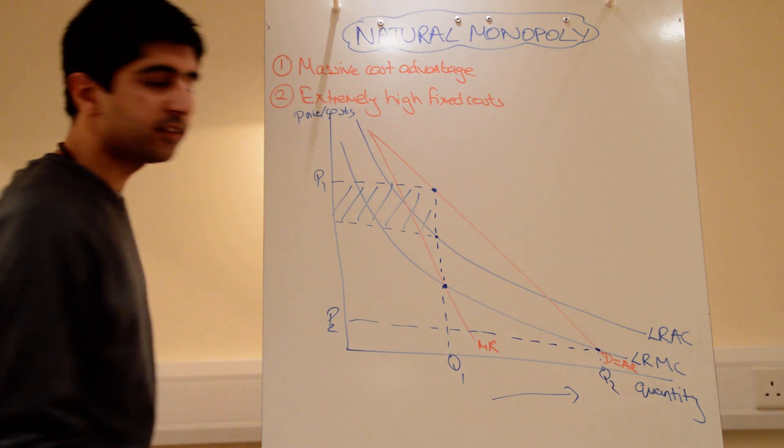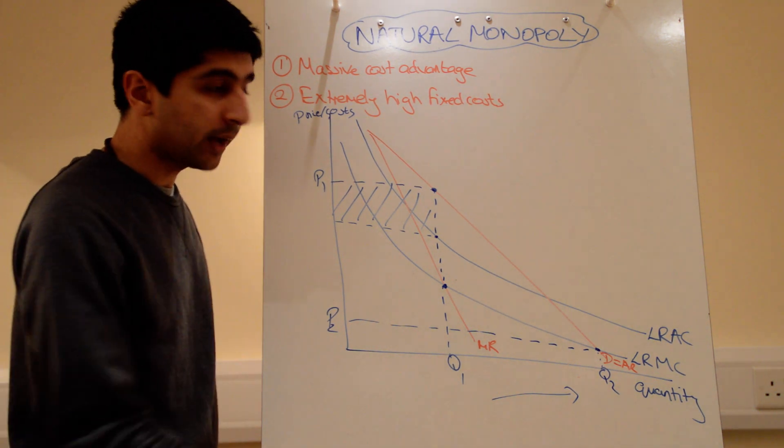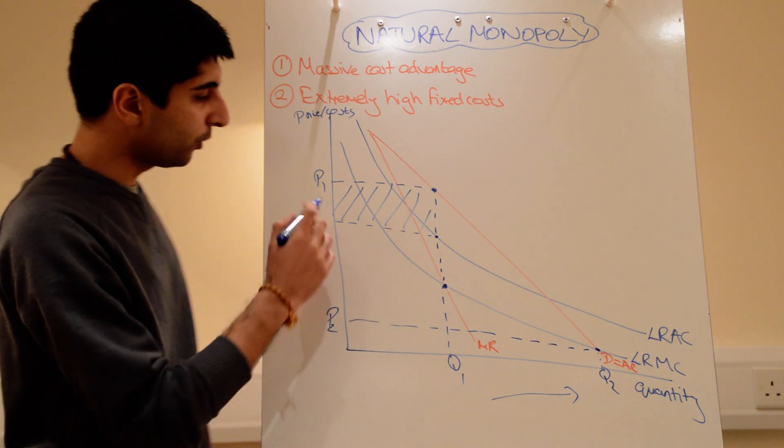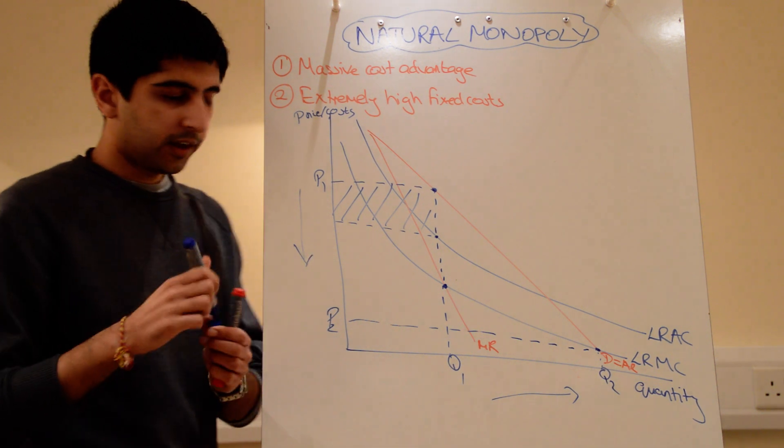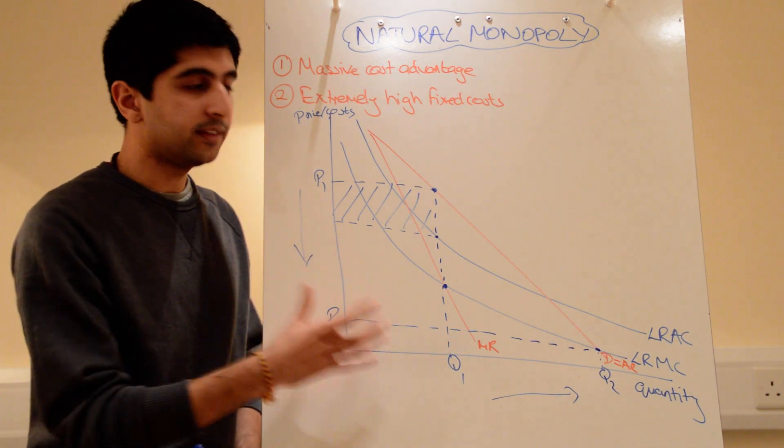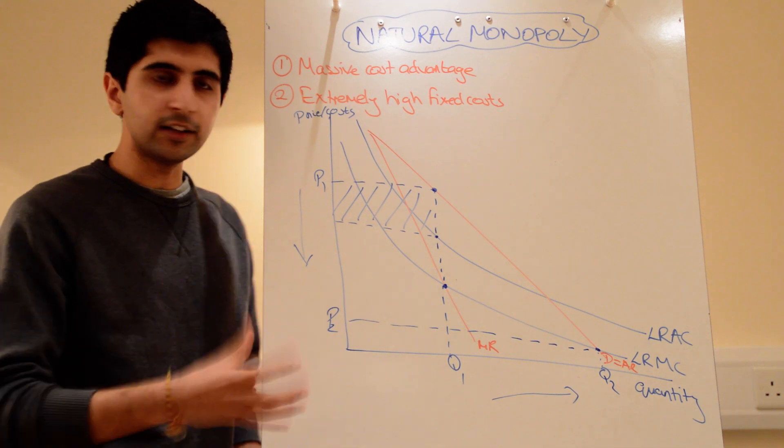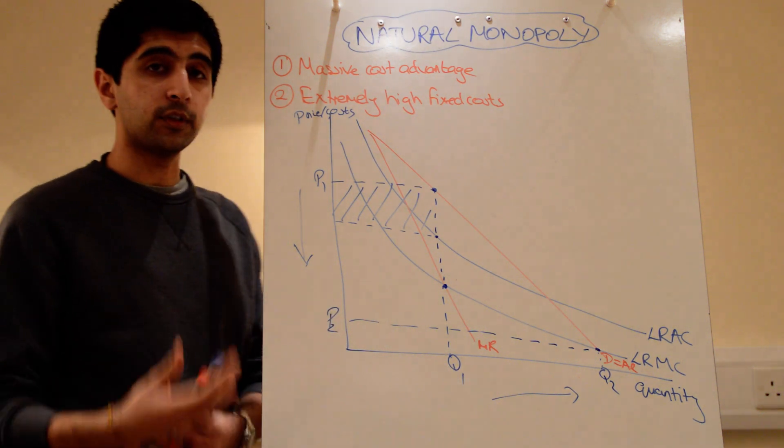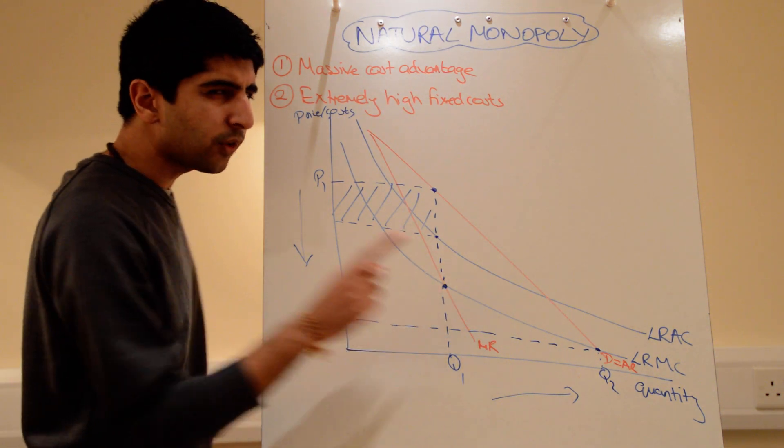And let's call this P2. So what happens now? Well, quantity has increased hugely. That was the point. Restricting quantity and also the price has fallen. And the only reason the government decided to regulate is because these services are essential. Essential public services. Essential social services. But that's not the end of the story.